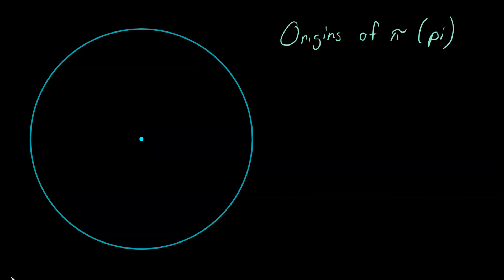Hello, math students. This video is going to be a little origin story on the number or symbol pi. Circles are a really fundamental shape that we have in the world. You see them everywhere, so it's probably important that we know a little bit about some of their basics. Before we get into the origins of pi, we'll just go over a few things about a circle.